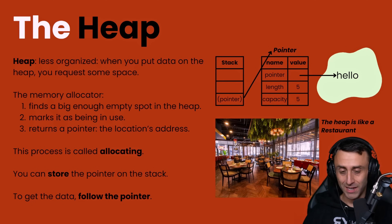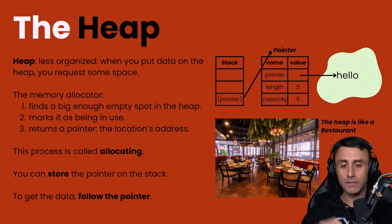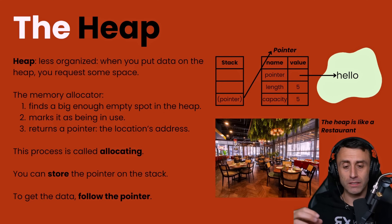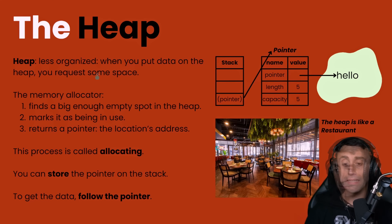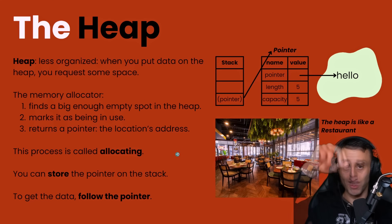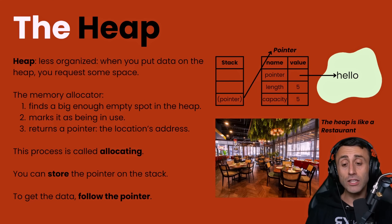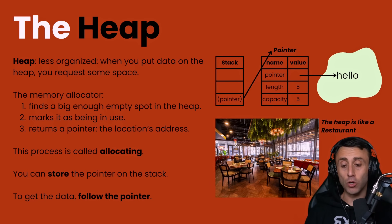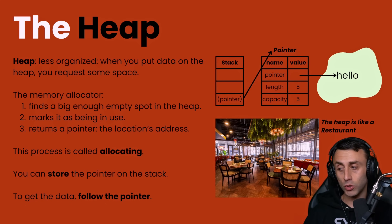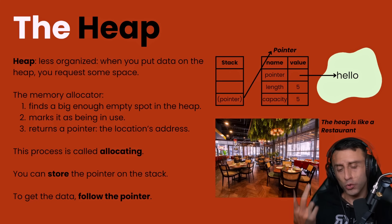The heap is less organized but very useful. When you put data on the heap, you request some space, and the memory allocator first finds a big enough empty spot, marks it as in use, and then returns a pointer — which is the location's address. This whole process is called allocating.